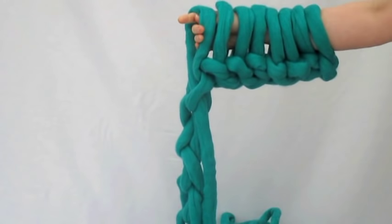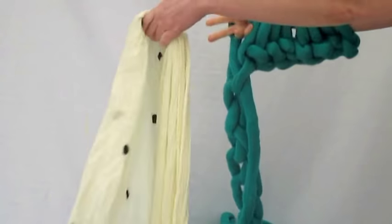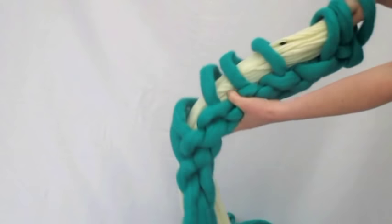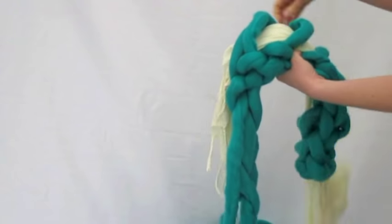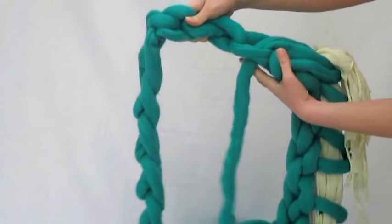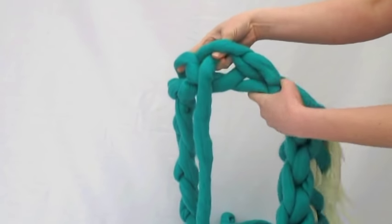At this point we have quite a few loops on our arm and we have a lot more to go. So I'm going to put them on a scarf. You can use a scarf, a piece of fabric, a towel, anything that just slides through the loops and keeps them. Just put them aside and then continue on with your loops.